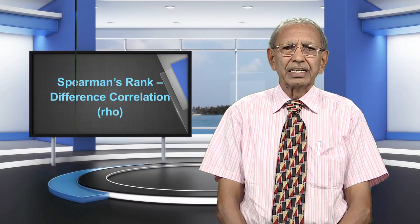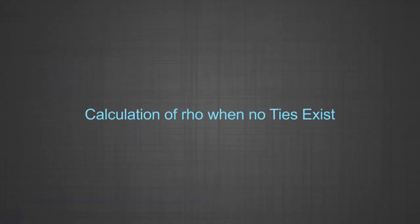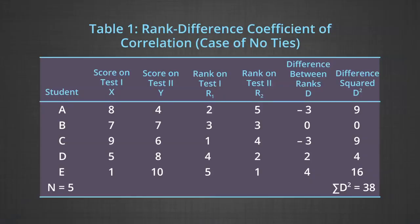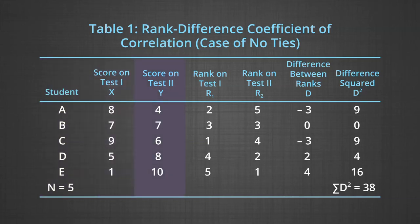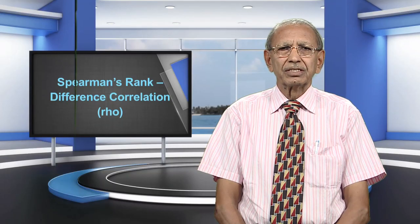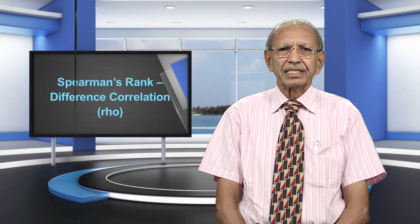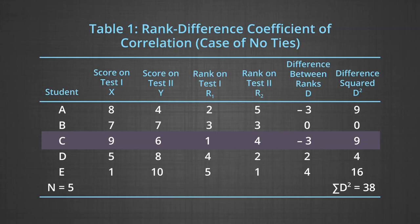We now take another look at the procedure for calculating Rho when no ties exist, using Table 1. Students are listed in column one, with scores on Tests 1 and 2 in columns two and three. Since there are no ties, ranking is simple: assign rank 1 to the highest score, rank 2 to the next highest, and so on, with the lowest score receiving rank n. Take one set of scores at a time and finish the ranking, then take up the second set. Student C gets the highest X score of nine and hence obtains rank 1.